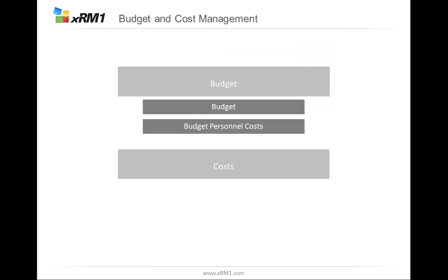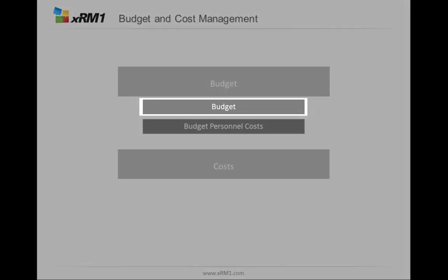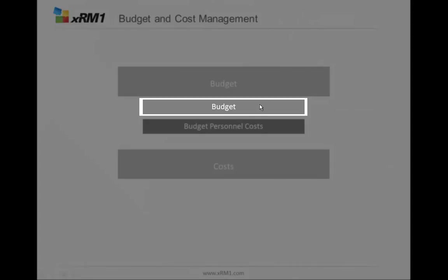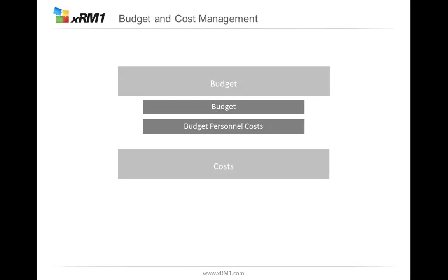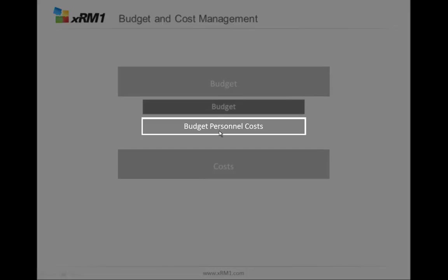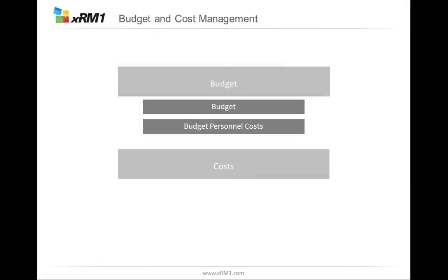Budget in CRM project is a monetary value you put in for planning the costs. Budget can be split into budget you manually put in — this can be like the audit amount, the audit amount minus margin, or if it's an internal project, the budget you get from your company. But it can also be budget for personal costs only, where you see what budget you need if the people work as planned. It can also be a combination of both — for example, budget for material and for personal costs.